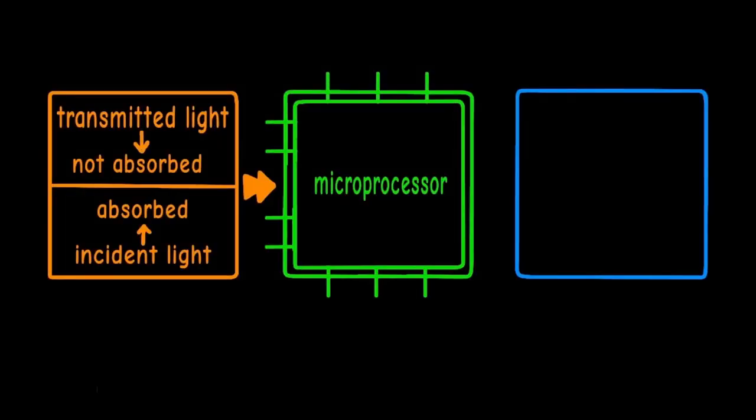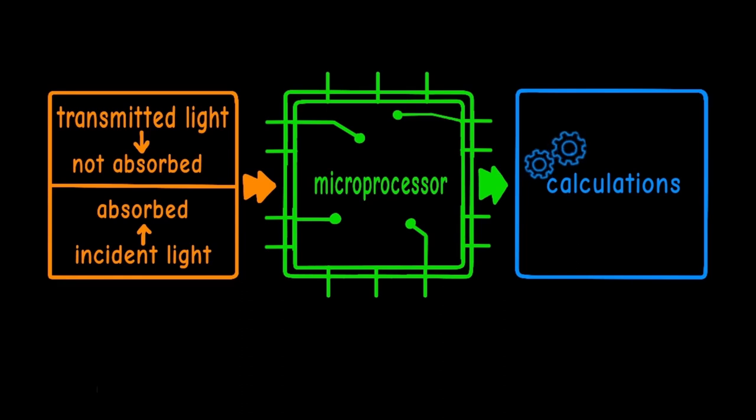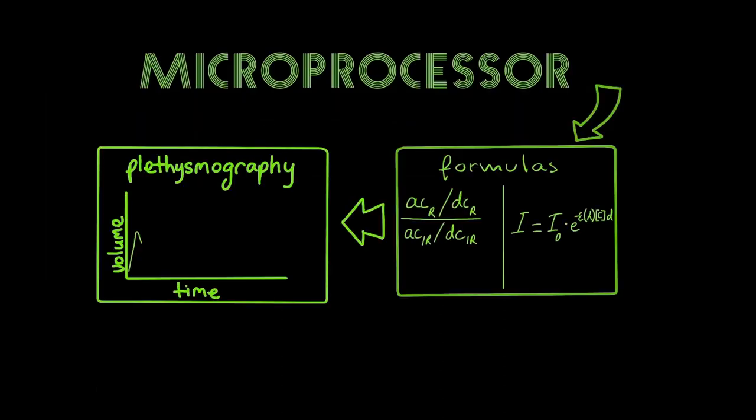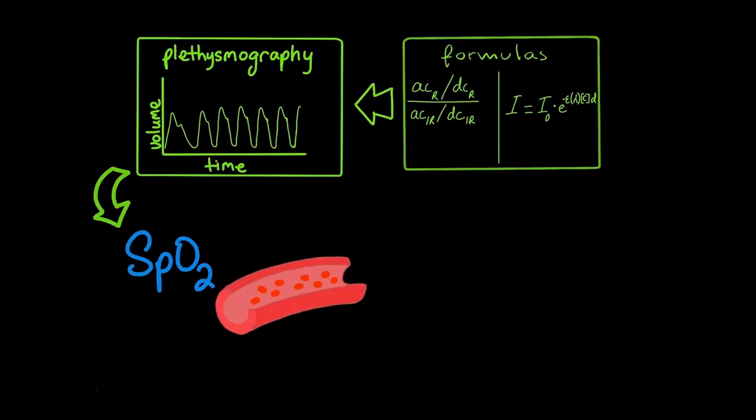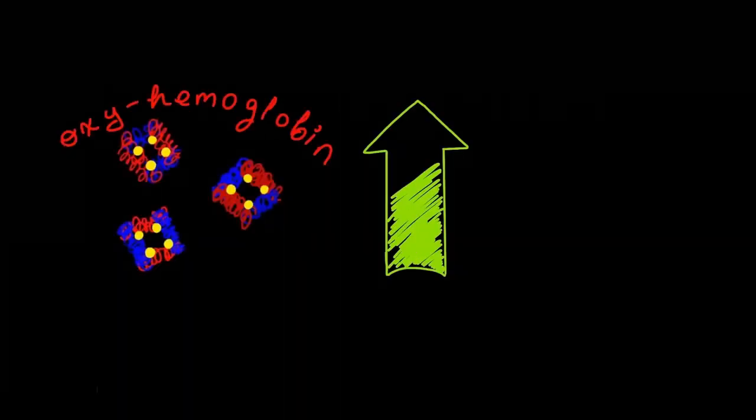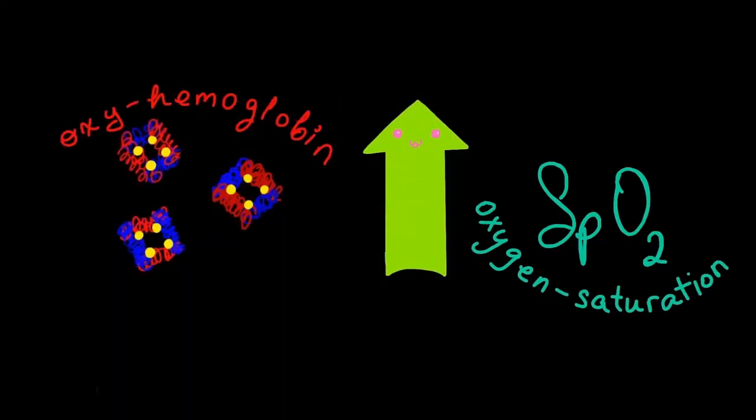All data is sent to our main hub, the microprocessor. It uses formulas plus a concept of volume called plethysmography to get the oxygen saturation of arterial blood, with the amounts of oxygenated and deoxygenated hemoglobin being a factor. More oxygenated hemoglobin leads to more oxygen saturation.